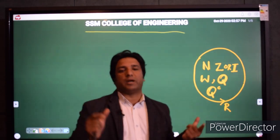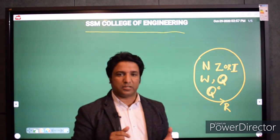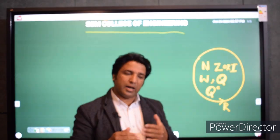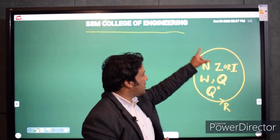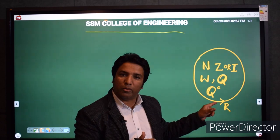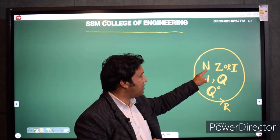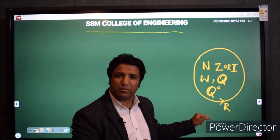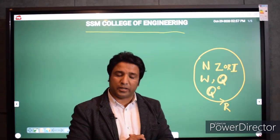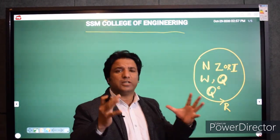You studied this concept of capital R in previous lectures up to 10th, 11th, and 12th standard. There are an infinite domain of real numbers — every natural number, integer, whole number, rational number, and irrational number. Real number is a big domain.